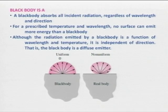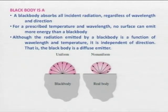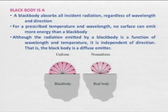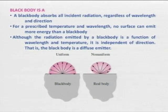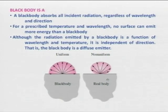Although the radiation emitted by a black body is a function of wavelength and temperature, it is independent of direction. It is a diffuse emitter — the best emitter and the best absorber. The word 'diffuse' is used because it is independent of direction, whereas a real body has a preference with direction.